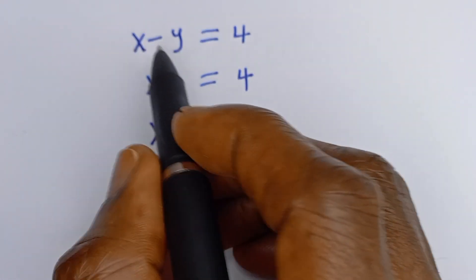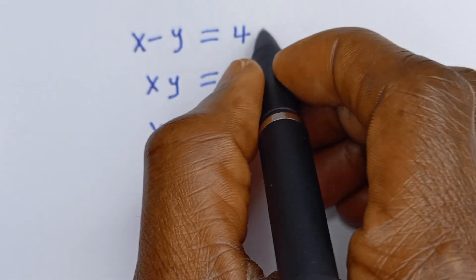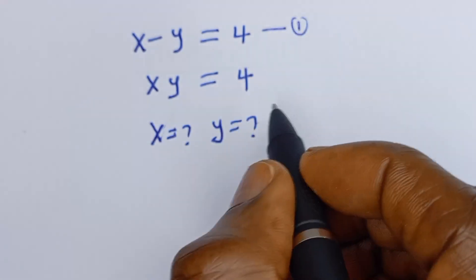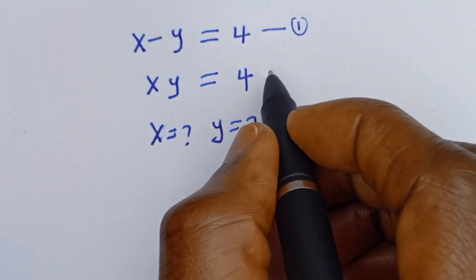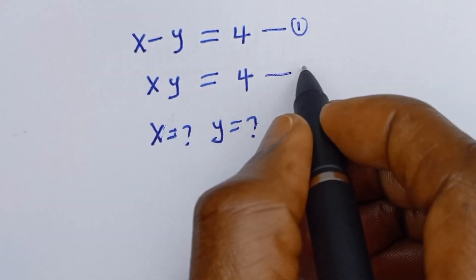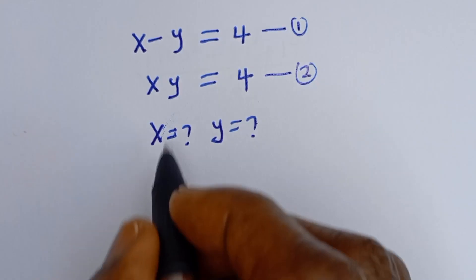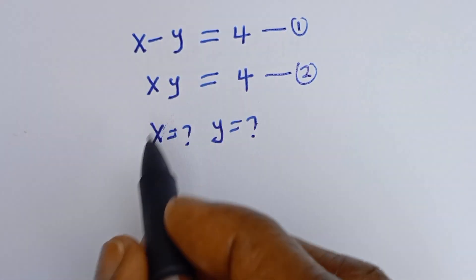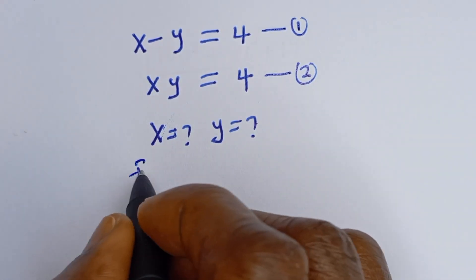If you look at this, S minus Y is equal to 4 — let's call this equation 1 — and S times Y is equal to 4 — let's call this equation 2.